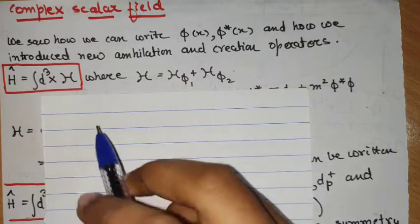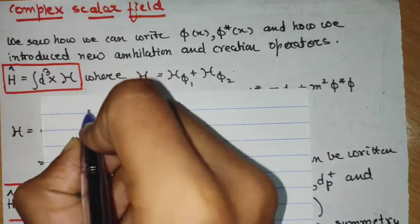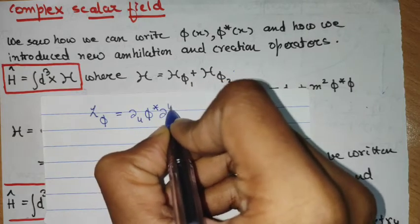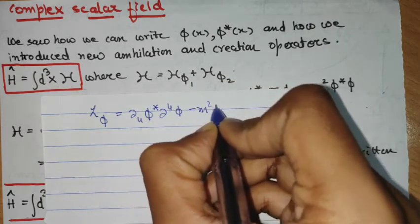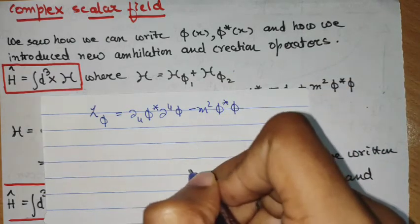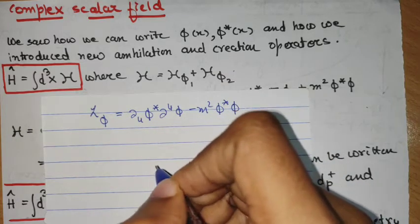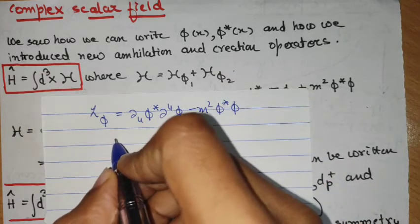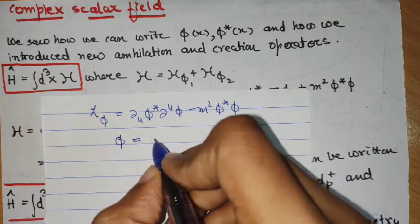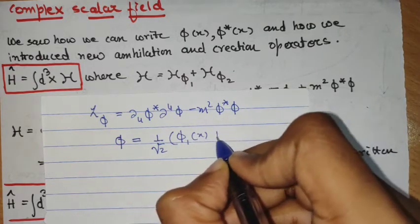In this video, we will continue the discussion on the complex scalar field. We saw that the Lagrangian associated to the complex scalar field was of this particular form. There are two fields, phi and phi star, and these two degrees of freedom could also be captured by decomposing the field phi into the form 1 over root 2 times (phi 1 plus i phi 2).